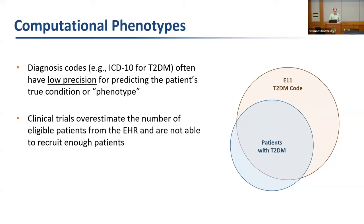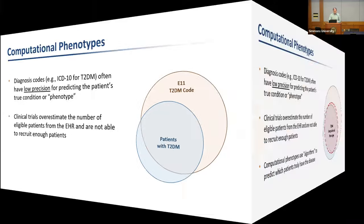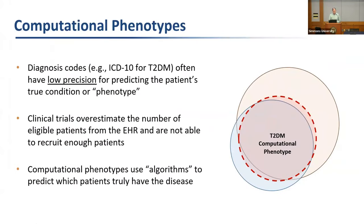It could be just a billing code, or someone has type 1 diabetes and was accidentally entered as type 2. What we're trying to do is find patients who really do have that phenotype. There are real implications: a clinical trial might be launched thinking they have enough patients to recruit, only to find halfway through the study that they can't recruit enough — a big reason trials fail.